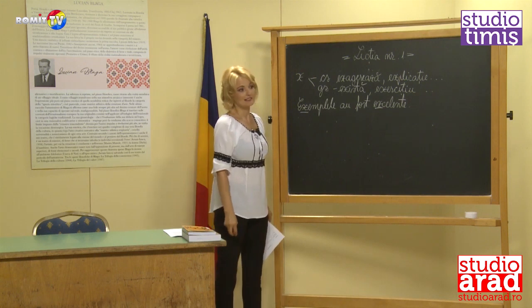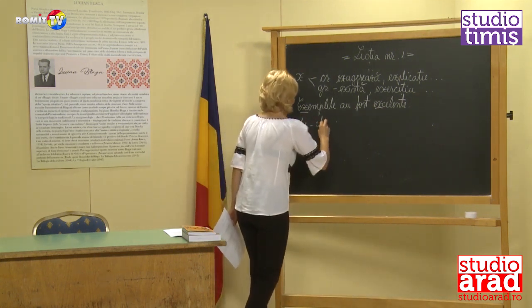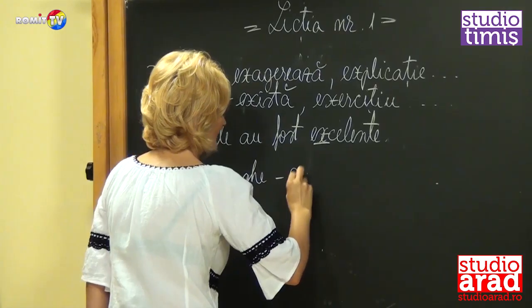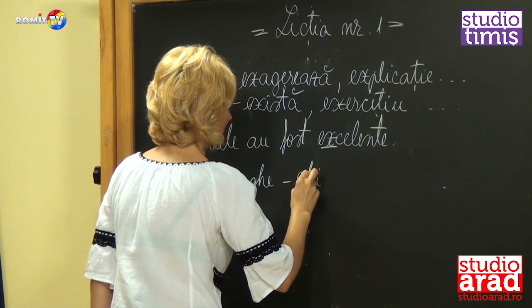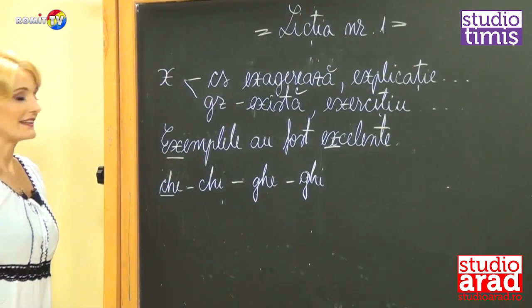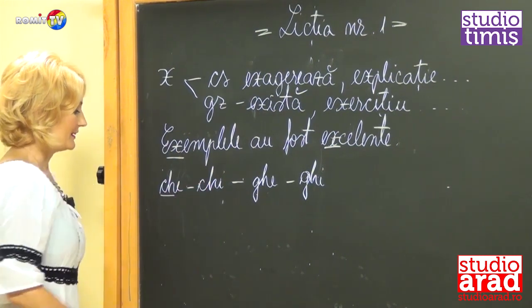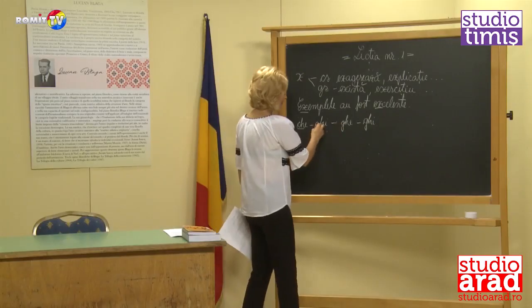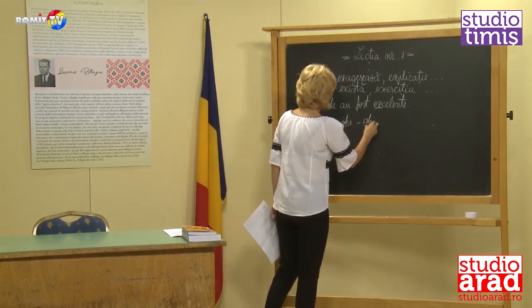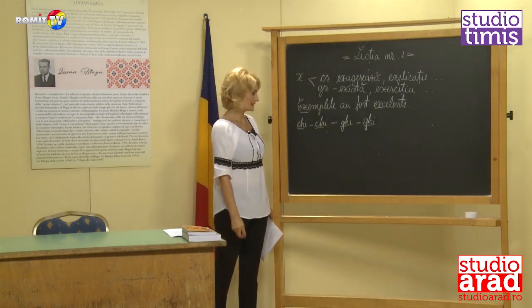We already saw that in the sound groups che-chi and ghe-ghi, a sound appears that is rendered by two letters. Che-chi, ghe-ghi — so we have two letters, ch and gh, which render a single sound.